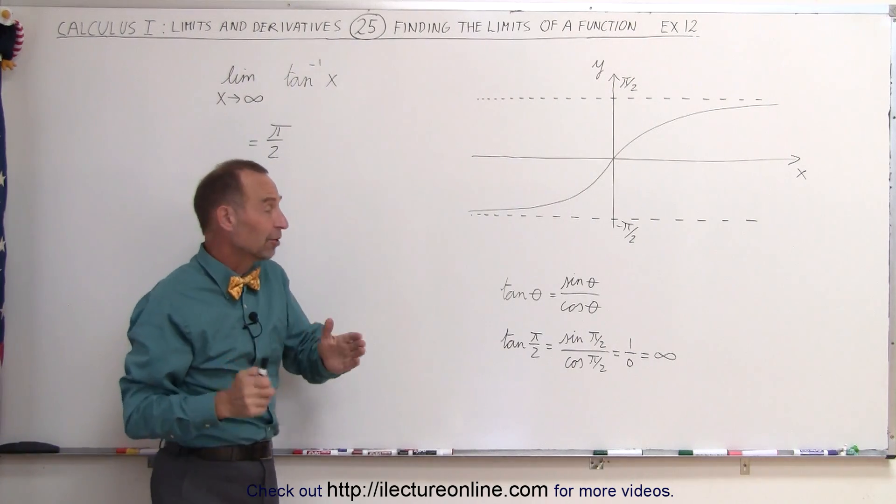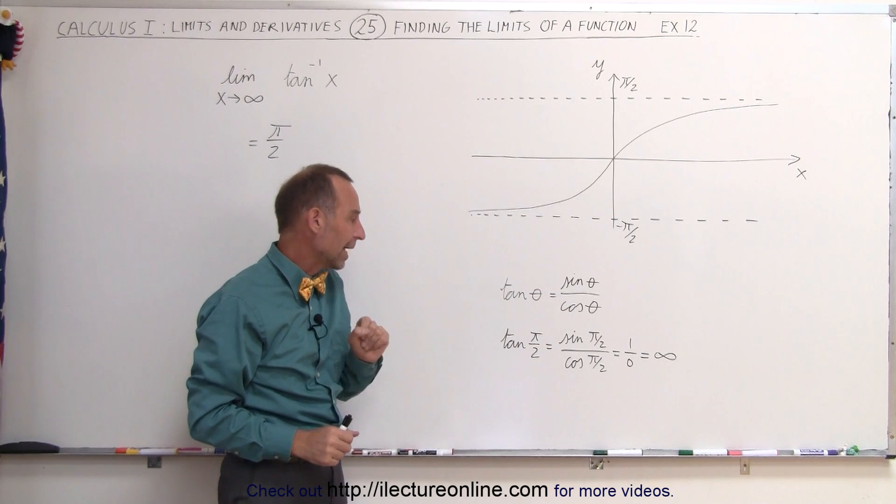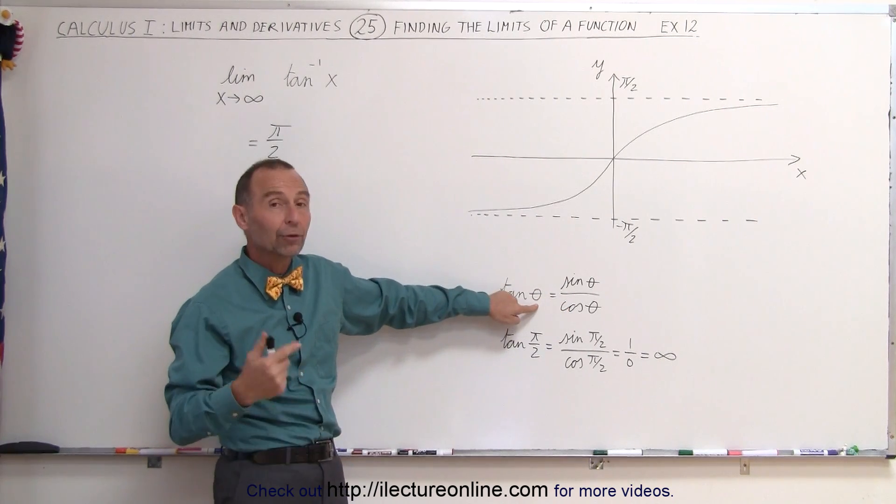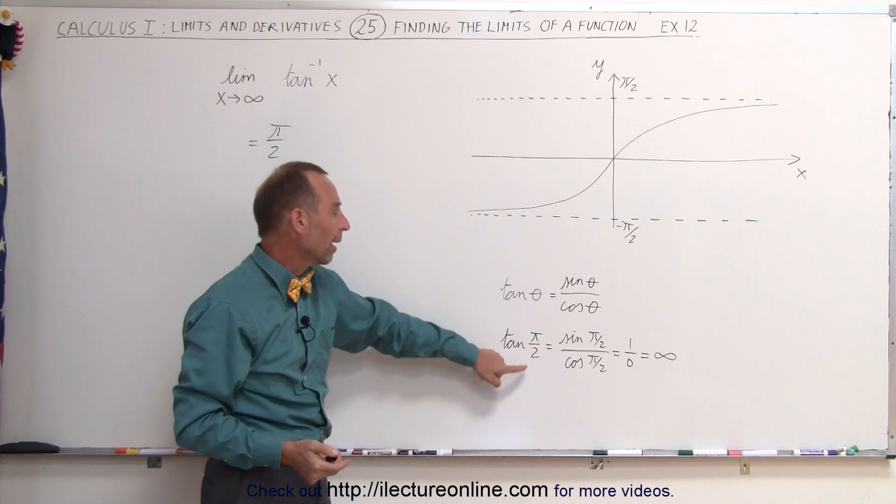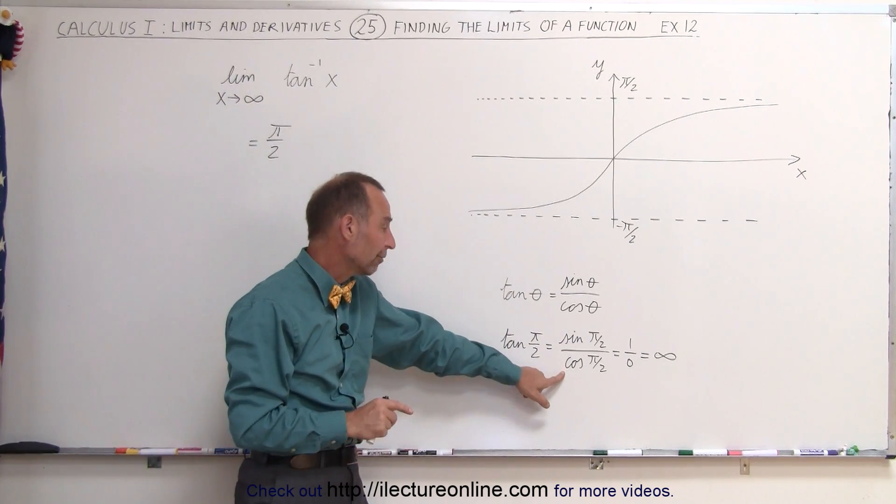To help us out, the definition of the tangent of an angle is the sine of the angle divided by the cosine of the angle. And if we plug in pi over 2 or 90 degrees, the tangent of pi over 2 is equal to the sine of pi over 2 divided by the cosine of pi over 2.